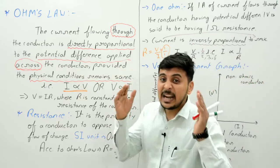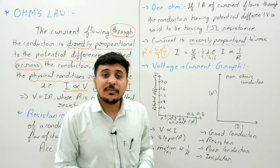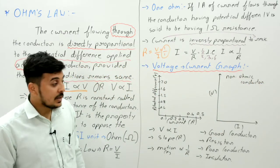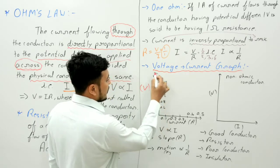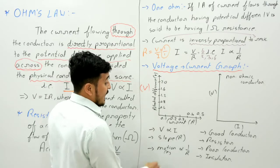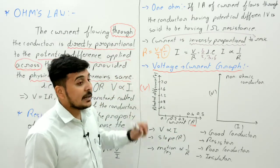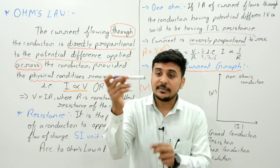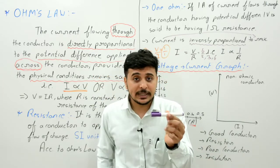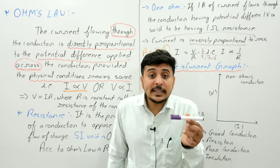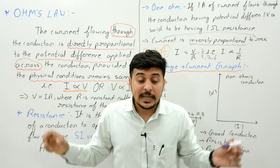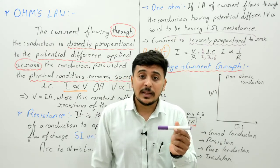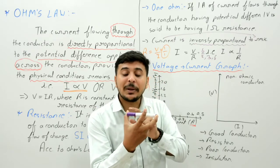Now, the voltage-current graph — one of the most important and simplest topics, but graphs confuse many students. Here we have a wire with some resistance. When a battery is applied across the two terminals connected to it, current flow starts. The amount of current depends on the battery used.